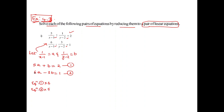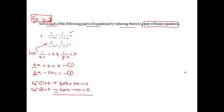This gives us 30A plus 6B equals 12, and 30A minus 15B equals 5. Now subtracting, the 30A terms cancel out, leaving 21B equals 7. Shifting the 21 to the other side, B equals 7 by 21, which simplifies to 1 by 3. So B equals 1 by 3.